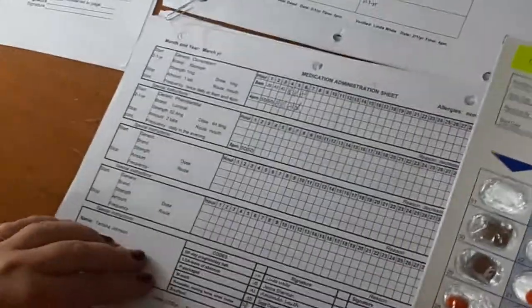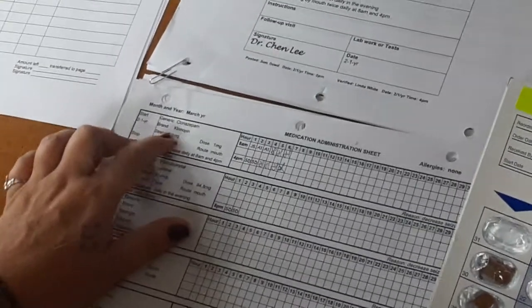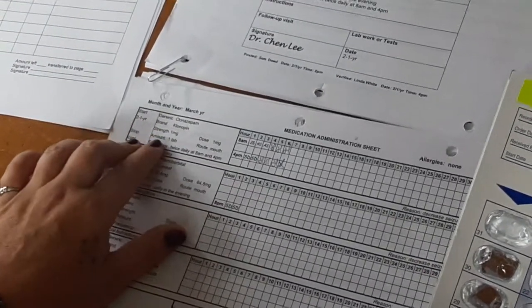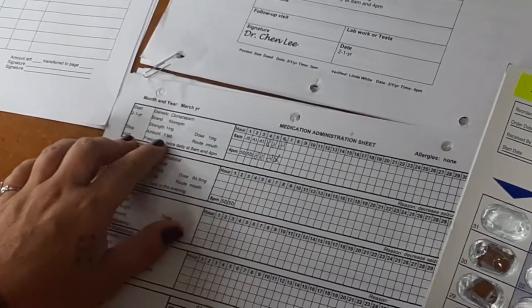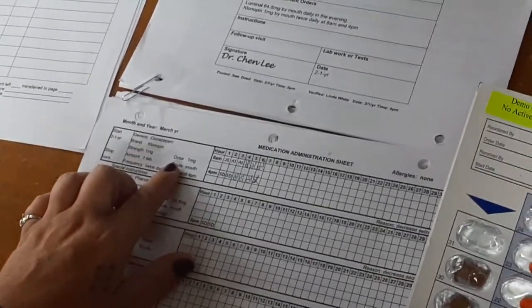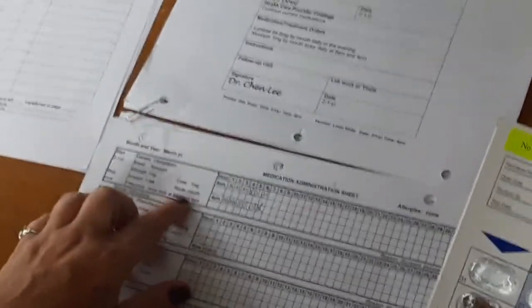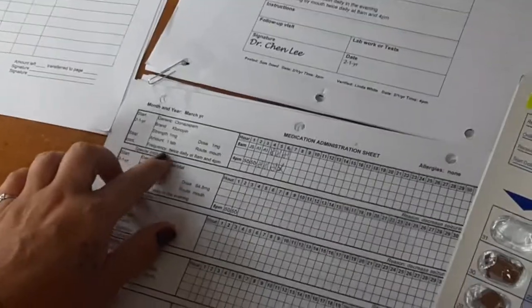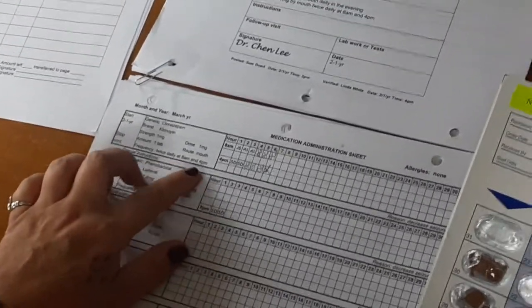On the med sheet, Tanisha Johnson, clonazepam, brand Klonopin, strength, 1 milligram, amount, 1 tab, dose, 1 milligram, route, mouth, frequency, twice daily, at 8 a.m. and 4 p.m.